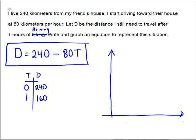So when I come over to my graph, I've got t down here and d over here. When I'm at 0, I have 240 to go. And after 1, I only have 160 left to go.